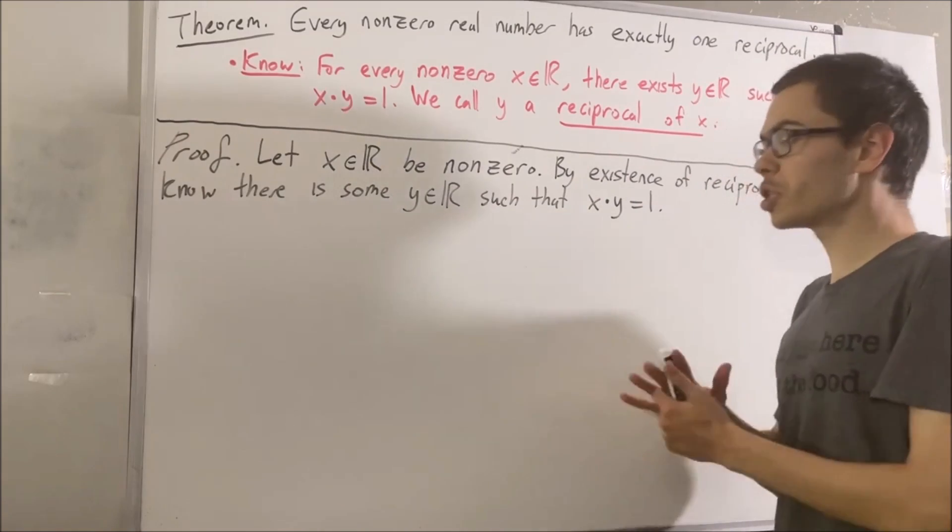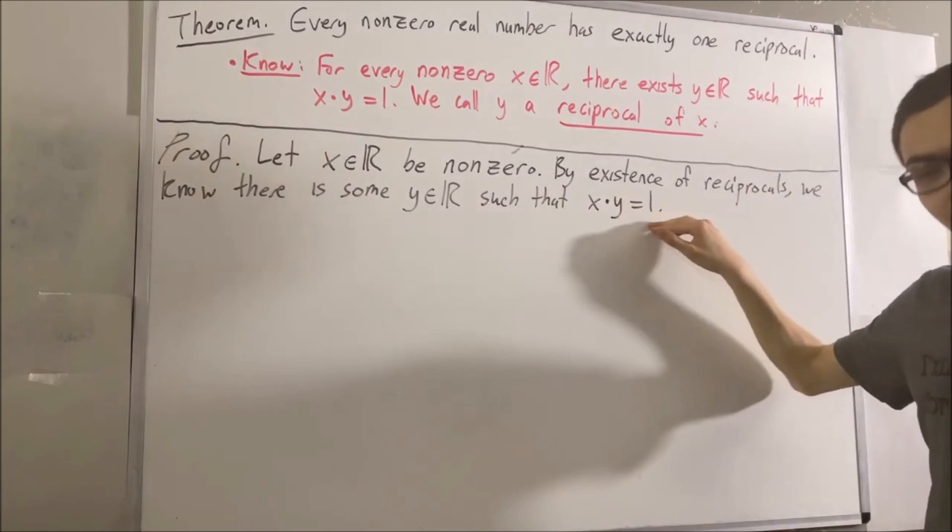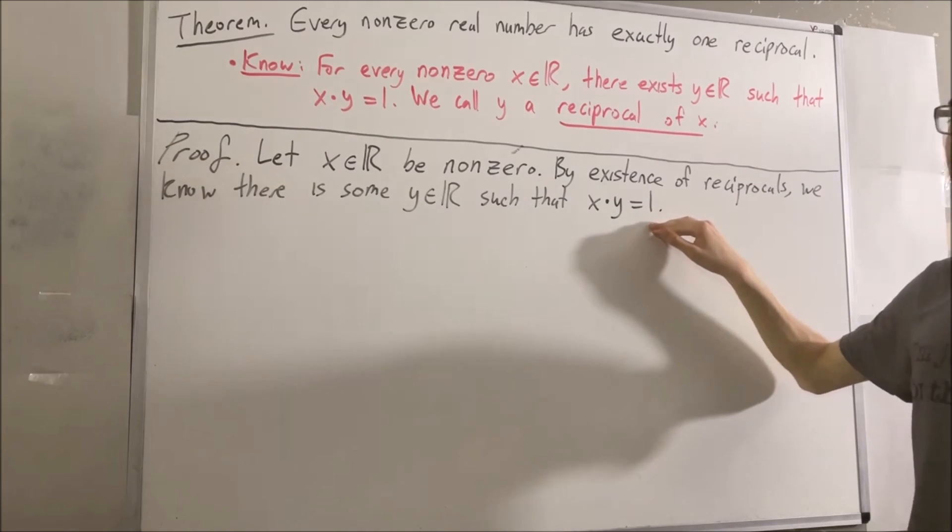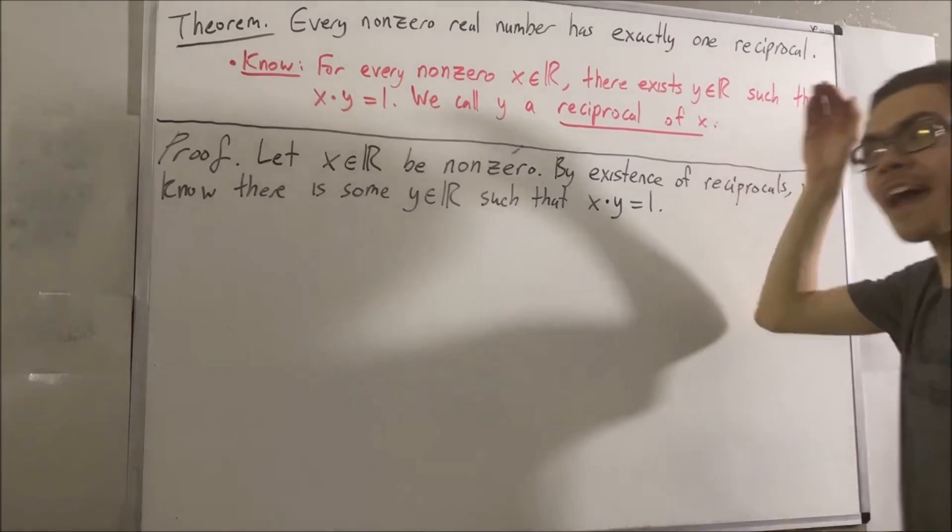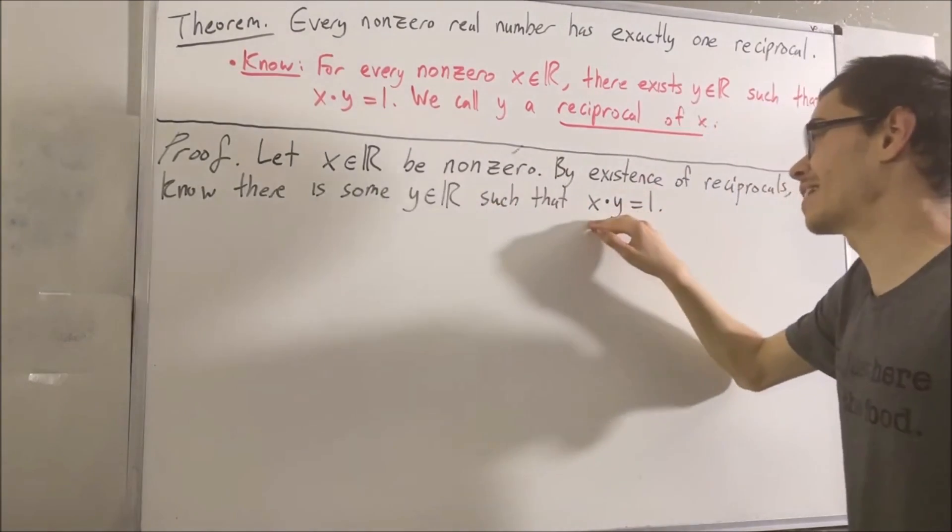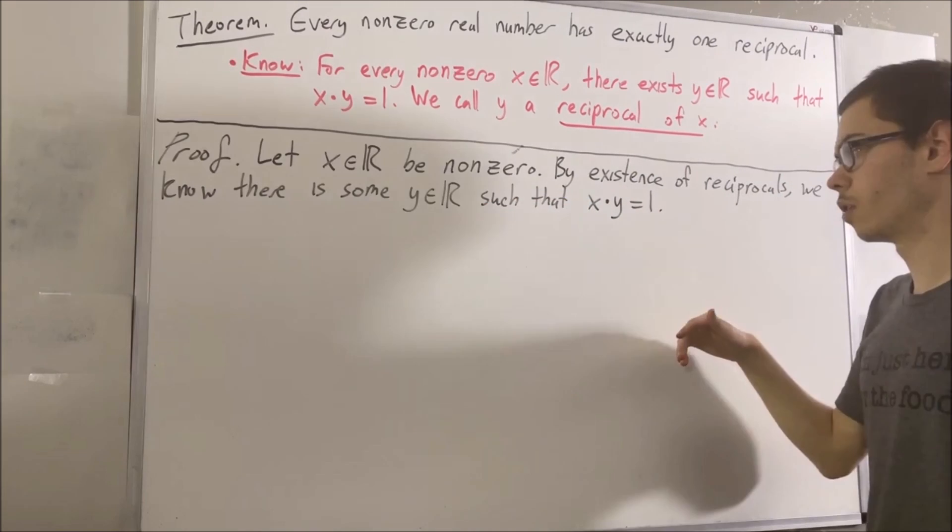But we want to show that y is the only reciprocal of x. In other words, we want to show that y is the only real number that satisfies this condition. How do we do that? Well, what we can do is prove that every real number that satisfies this condition is equal to y.